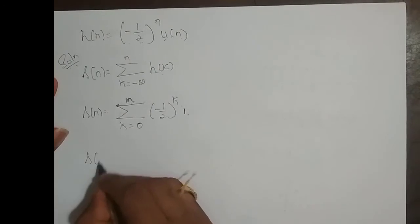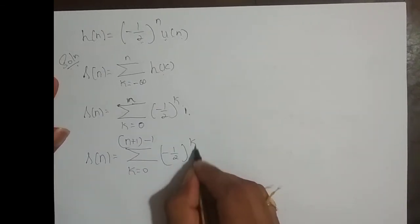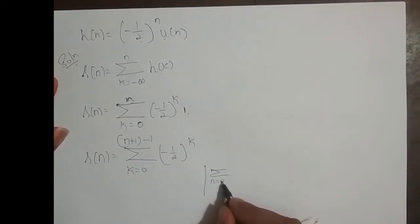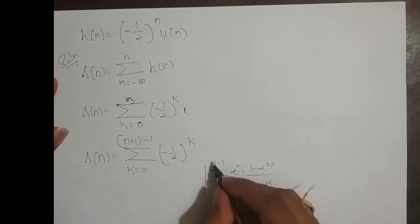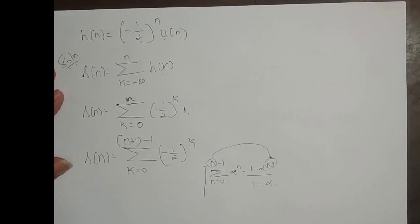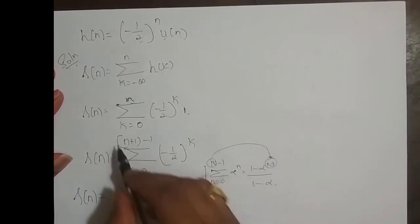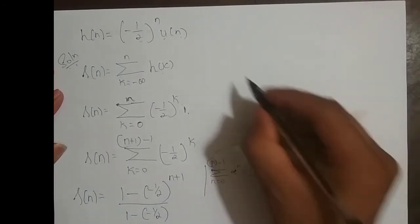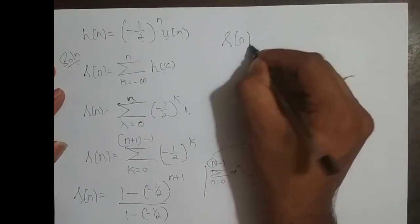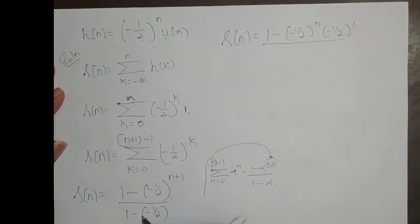So I write this as summation k varying from 0 to n plus 1 minus 1, of minus 1 by 2 power k, in order to get the standard form. The standard form is: summation n from 0 to N minus 1 of alpha power n equals 1 minus alpha power N, divided by 1 minus alpha. Here alpha is minus 1 by 2, and capital N is n plus 1. Applying this, we get 1 minus minus 1 by 2 power n plus 1, divided by 1 minus minus 1 by 2, which is 3 by 2.